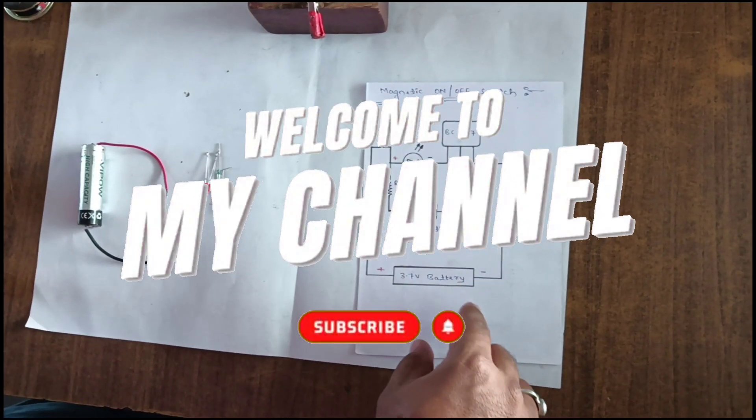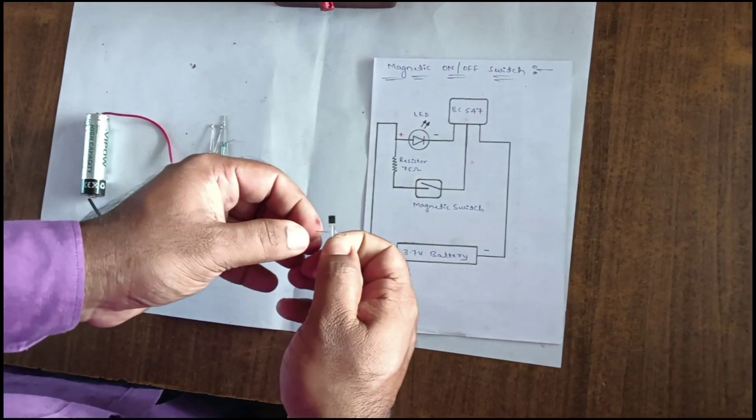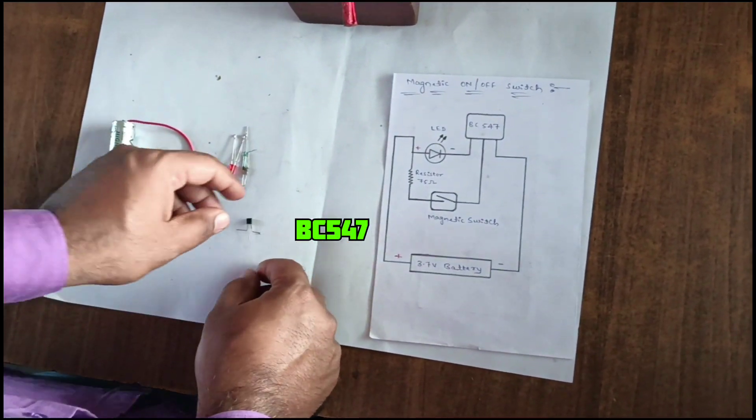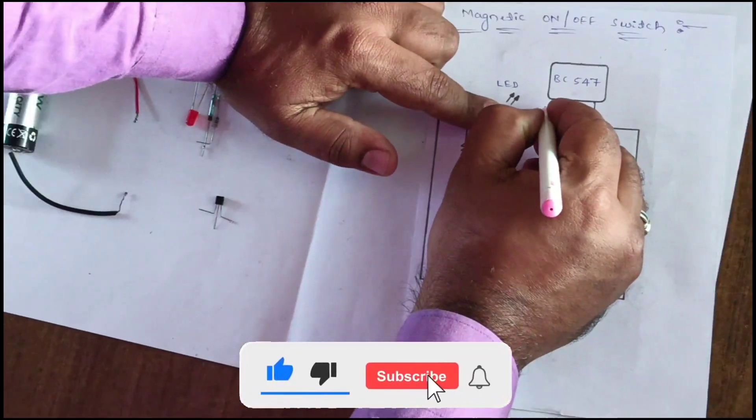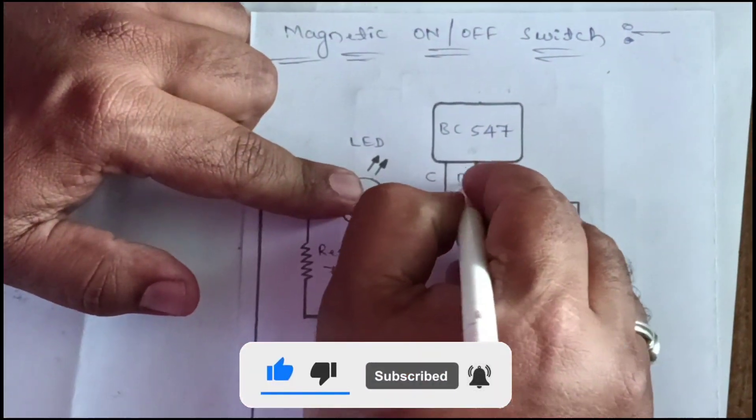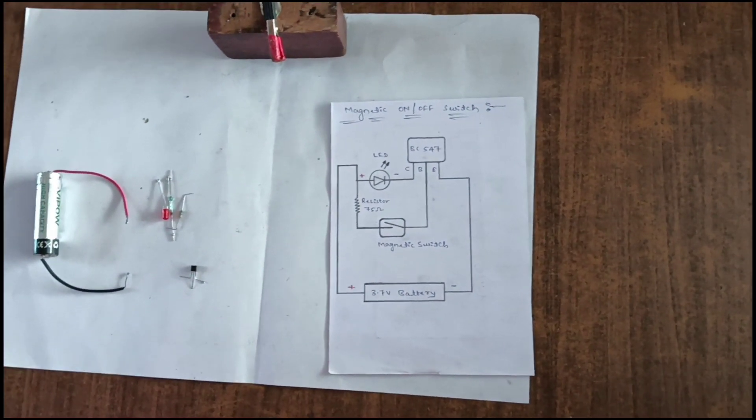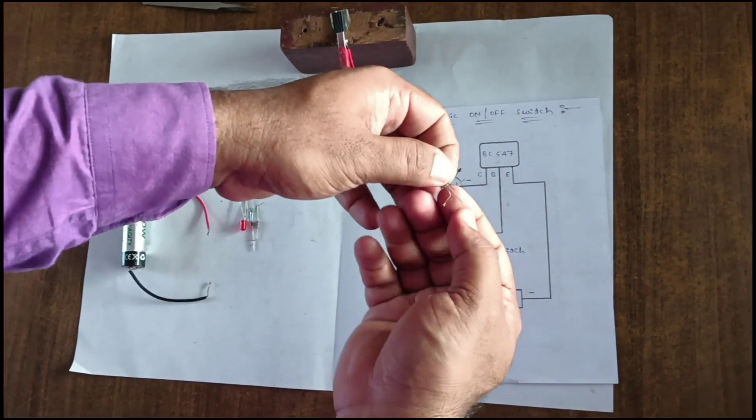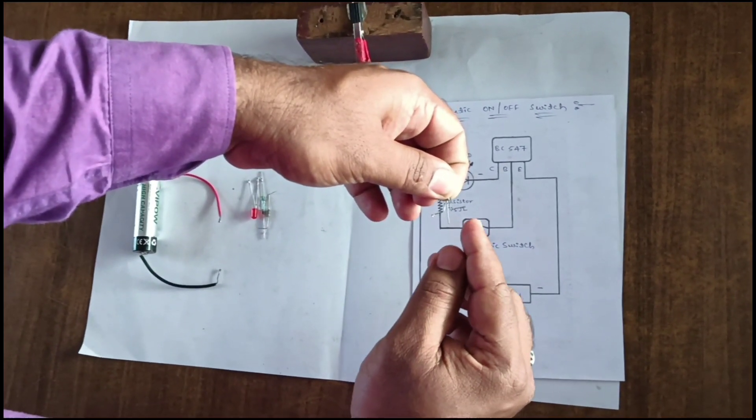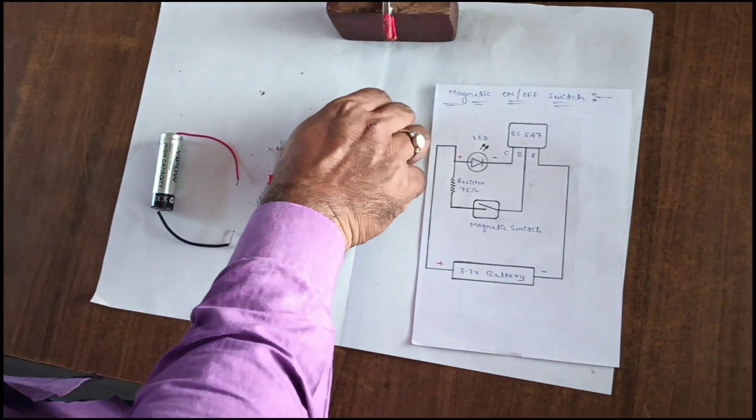This is a magnetic on-off switch project. In this we use a BC547 transistor. It has three terminals: collector, base, and emitter. This is the collector, this is the base, and this is the emitter. The BC547 is a three terminal transistor. Next we take